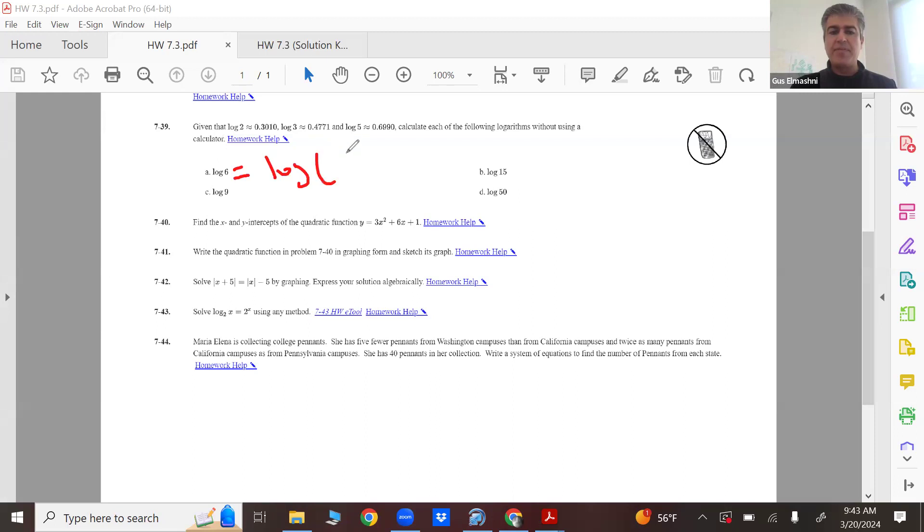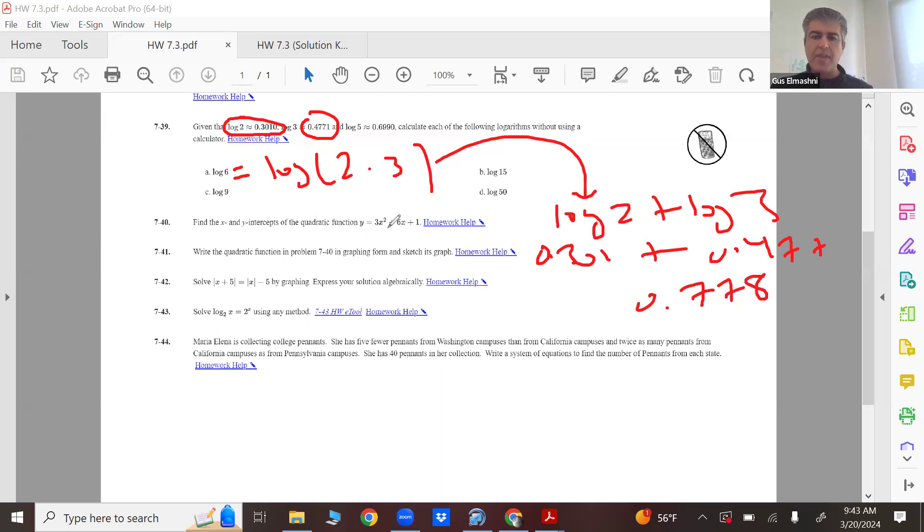You had basic log values, like log 2, log 3, log 5. You had to combine those logs to get log 6 or log 9 or log 15. So for log 6, you had to do this. We know 2 times 3 is 6. You break it up as log 2 plus log 3. You're given 0.301 and 0.4771. If you add them up, you should get 0.778.